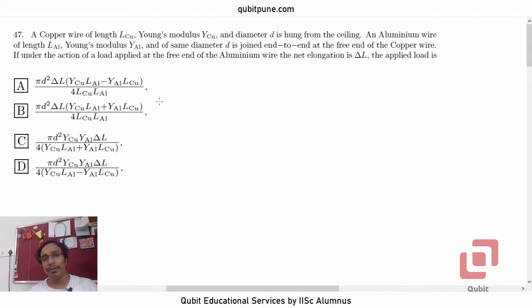We have already solved the first MCQ in our previous video. In this video, we are going to solve the second MCQ, that is MCQ number 47 from the paper, based on mechanical properties of solids. It's a very simple MCQ.